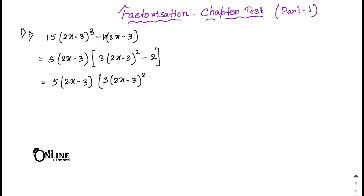So the answer is: 5(2x minus 3) into [3(2x minus 3) whole square minus 2]. Now moving to number 2: a into (b minus c), then (b plus c), minus d into (c minus b).